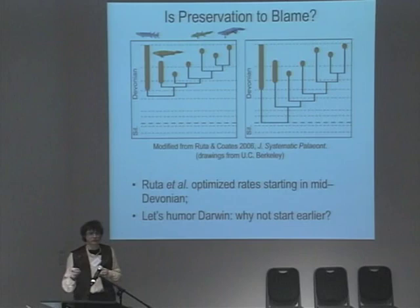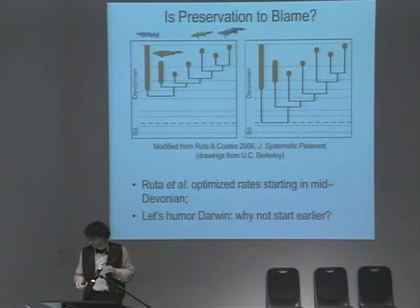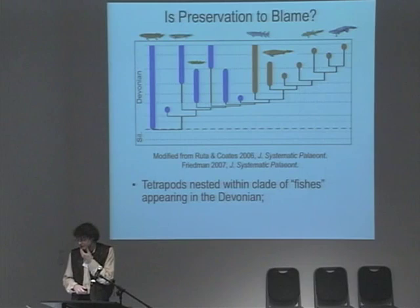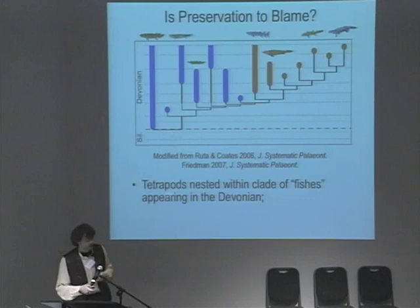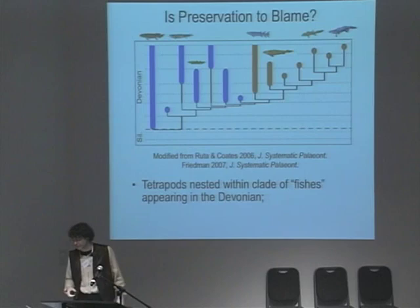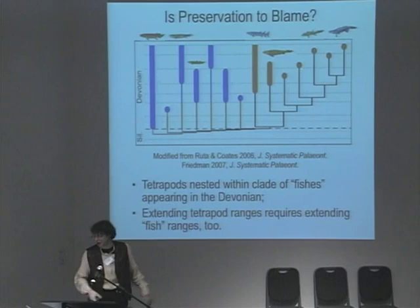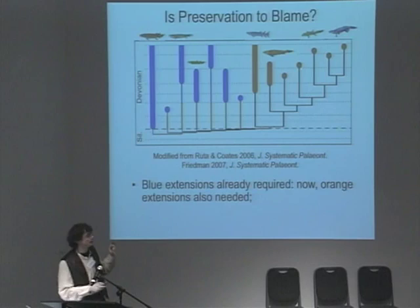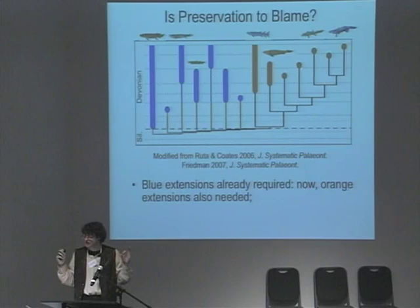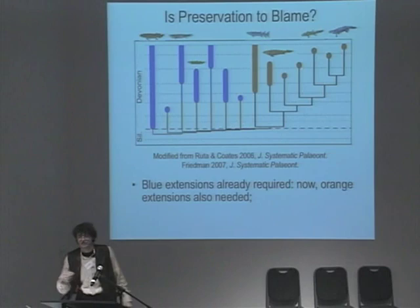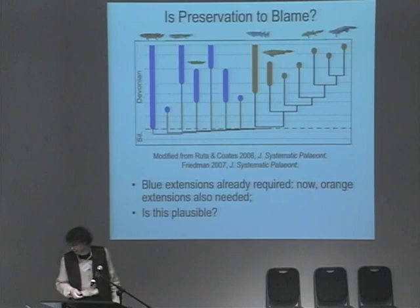Let's humor Darwin — let's start earlier, drag the origin down so we have the entire Devonian to play with. You can't treat this in a vacuum: the phylogeny is important because we are sarcopterygian fish who left the ocean. There are a bunch of other sarcopterygians, and tetrapods are actually well-nested in sarcopterygian fishes appearing throughout the Devonian. If we want to drag the tetrapod radiation to the base of the Devonian, we have to drag all of these other groups down too — lungfish and other relic sarcopterygian groups. The question is, can we add in all of these implied missing lineages necessitated by a basal Devonian radiation of tetrapods? Is this plausible?